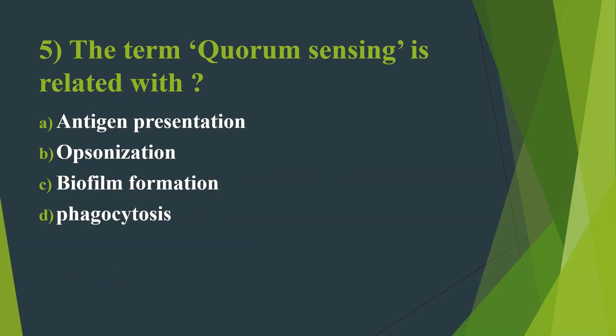Fifth question: The term quorum sensing is related with — Option A: Antigen presentation. Option B: Opsonization. Option C: Biofilm formation. Option D: Phagocytosis. Here the answer is Option C, Biofilm formation.